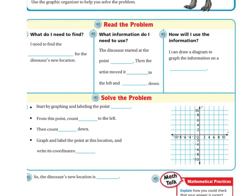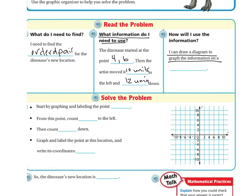What do I need to find? I need to find the ordered pair for the dinosaur's new location. What information do I need to use? The dinosaur started at point four six, and then the artist moved it ten units to the left and twelve units down. How will I use this information? I can draw a diagram to graph the information on a coordinate plane.